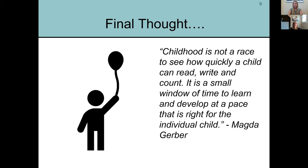My final thought: I know what a big lift you are all doing as educators and parents wearing many hats. It's okay if the outcomes we desire aren't the outcomes children are achieving. By answering your children's questions, sitting beside the learner, and providing opportunities to manipulate their environment, learning is happening. Childhood is not a race to see how quickly a child can read, write, and count. It is a small window of time to learn and develop at a pace that is right for the individual child. Thank you for listening today.